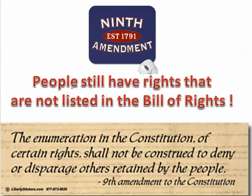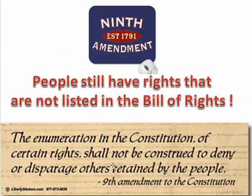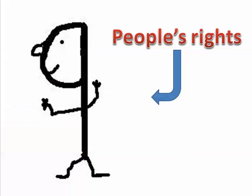The Ninth Amendment: people still have rights that are not listed in the Bill of Rights. It says the enumeration in the Constitution of certain rights shall not be construed to deny or disparage others retained by the people. In other words, this isn't a complete list — people have other rights not listed here. A way to remember it: the nine looks like a little person, representing the people's rights.